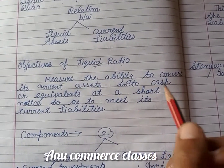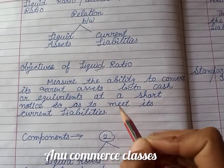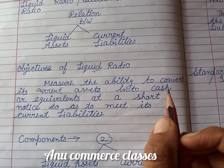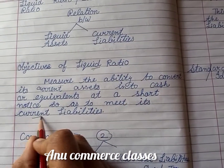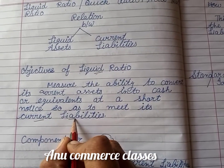The main purpose of liquid ratio is to check, in short periods, whether current assets can be converted into cash quickly enough to meet short-term liabilities — that is, to verify whether the company can pay off its short-term obligations.